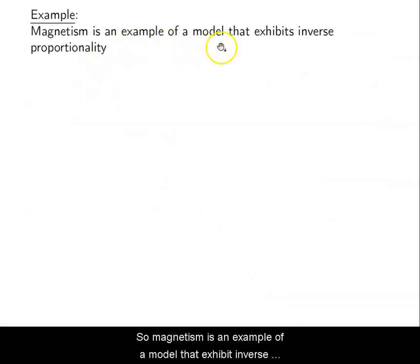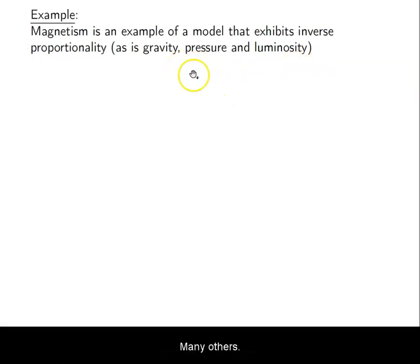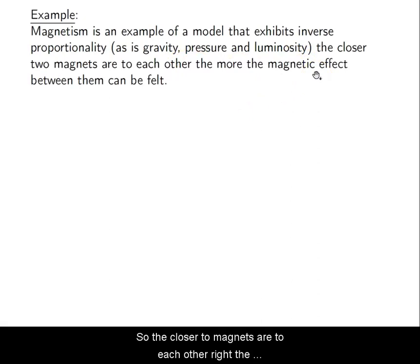Magnetism is an example of a model that exhibits inverse proportionality. So gravity also exhibits this inverse proportionality, so does pressure and luminosity among many others. The closer two magnets are to each other, the smaller the distance between them, the greater the effect of magnetism of attraction can be felt. So this is inverse proportionality. Very, very small distance between them means a very large attraction. However, if you hold two magnets very far apart, the attraction between them is pretty much zero. You feel no attraction between them.